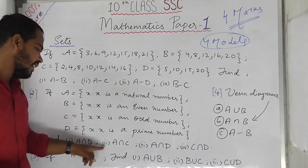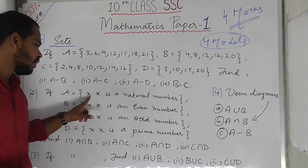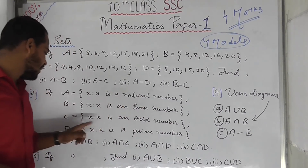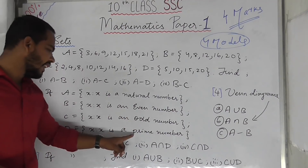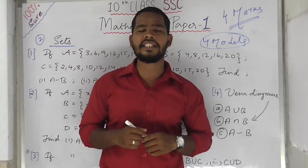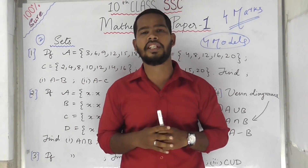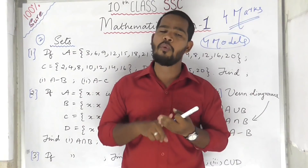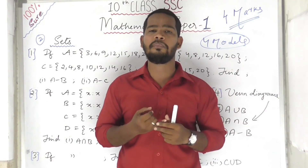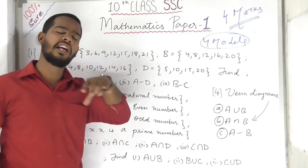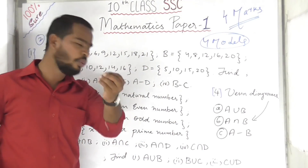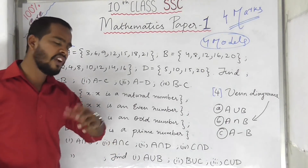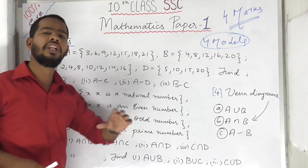The second model is intersection. Given A as a set of natural numbers, B as even numbers, C as odd numbers, D as prime numbers — you should know the types of numbers: real numbers, prime numbers, composite numbers, odd numbers, whole numbers. Intersection and union are the key operations for this model.